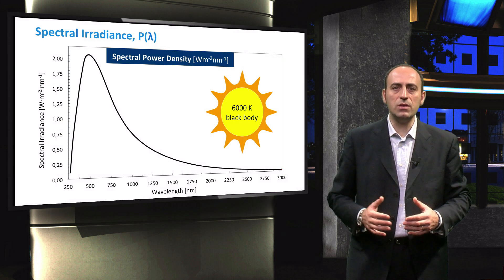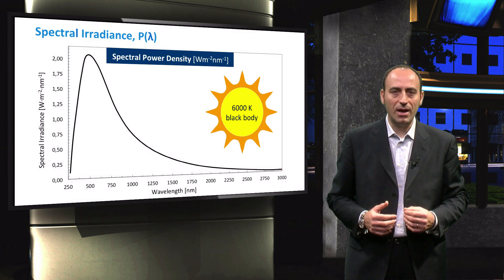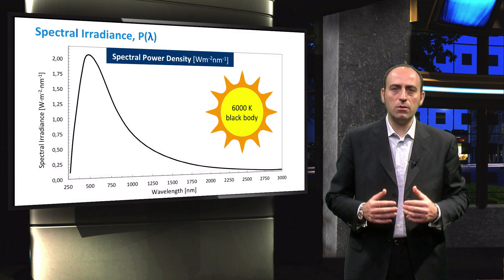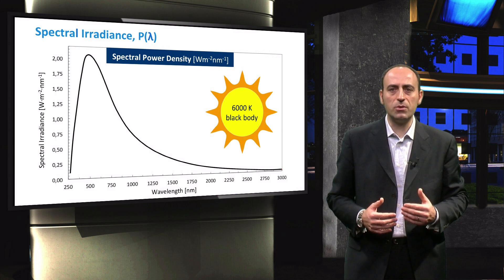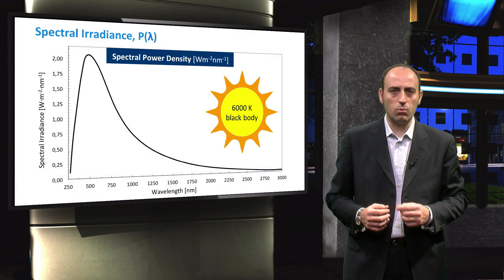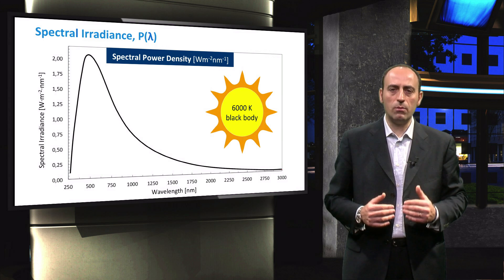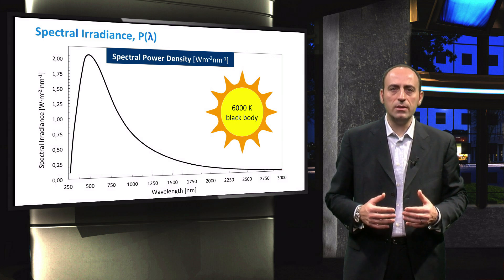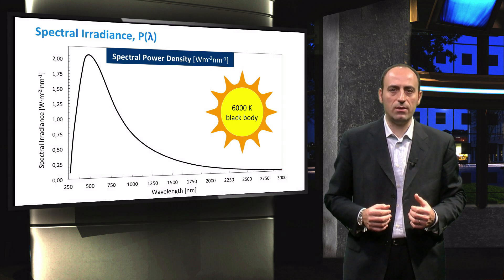In this graph, you can see the spectral irradiance, or spectral power density, of a black body as a function of wavelength. This is the most common way of characterizing a light source, expressed in watts per square meter at a particular wavelength. This electromagnetic wave travels from the Sun through outer space until it comes to our planet. Due to Earth's atmosphere, this nicely shaped black body radiation translates into something wavy and noisy.